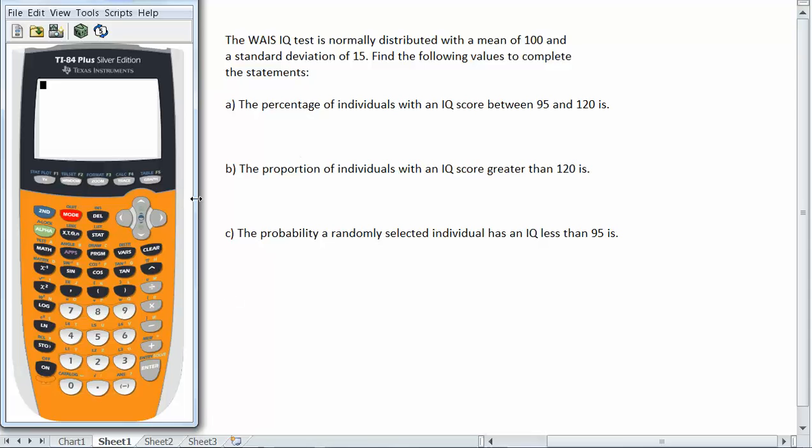So what we do is we use the calculator and we get what's really the proportion, and we just convert that to a percentage by multiplying by 100 or moving the decimal to the right two places.